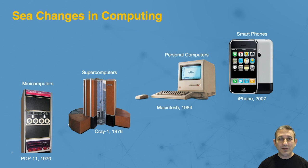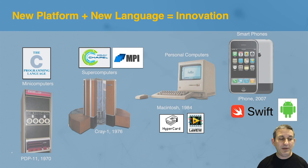There's a saying in computer science that every generation of platform gets a programming model that unlocks the power and potential of that platform. So famously, the PDP-11 and the mini-computer got C and Unix. Thompson and Ritchie's Turing Awards were around the idea of them unlocking the power of mini-computers by developing that programming environment.